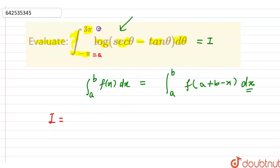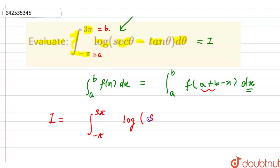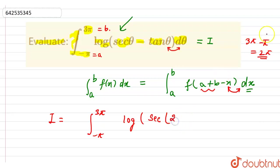is also equal to the integral from a to b of f(a plus b minus x) dx. Here the value of a is minus pi and value of b is 3 pi. So a plus b equals 2 pi. We can write I equal to the integral from minus pi to 3 pi of log sec(2 pi minus theta) minus tan(2 pi minus theta) d theta.